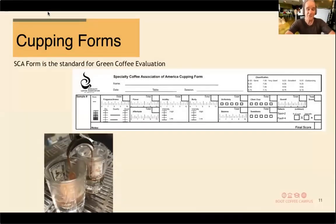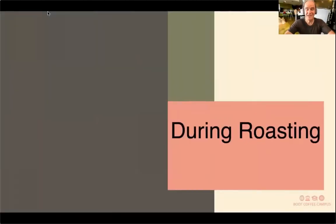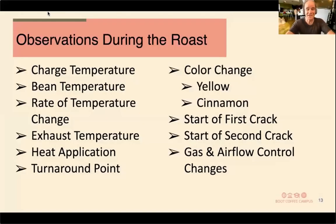Post-roasting, select the right cupping form — for example, the SCA cupping form. At Boot Coffee, we use a very distinct cupping form. Using forms really helps you keep track of roasting performance. During roasting, the charge temperature — at which coffee is introduced into the roasting chamber — sets the pace for the roasting profile. We typically express charge temperature in air temperature; for instance, charging at 350°F means 350°F as indicated by the air temperature thermocouple.